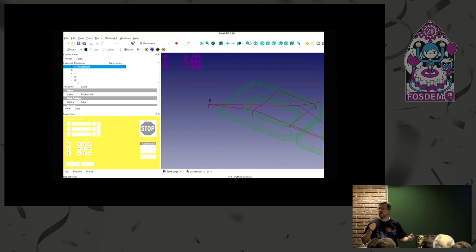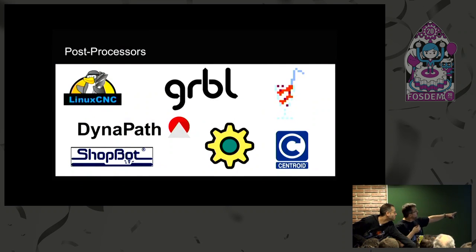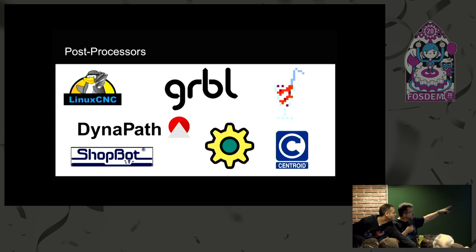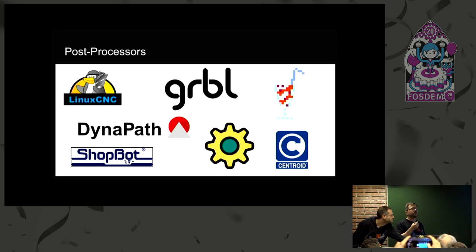That's what I've got. These are a few of the post processors we have right now: LinuxCNC, Smoothie, Centroid, Dynapath — quite a few of the most common machines you'll see in hackerspaces or small companies. We can generate G-code for those right now.